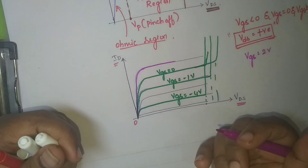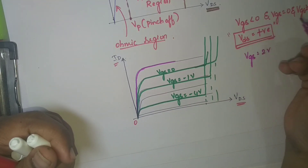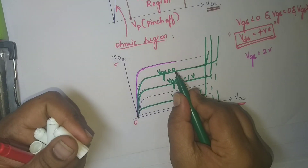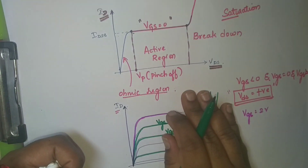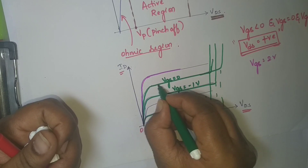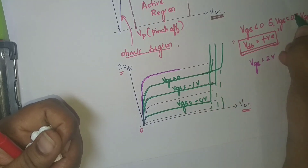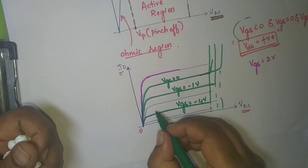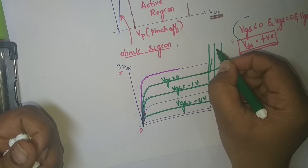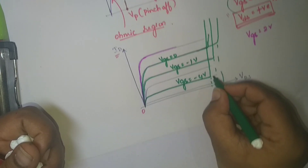I have more than three different VGS levels plotted. When VGS is equal to 0 volts, the characteristic follows the same pattern — you have ohmic region, active region, saturation region, and breakdown region. When VGS is negative, again you have ohmic region, active region, and breakdown region. If I reduce VGS further, you again have ohmic region, active region, and breakdown region.